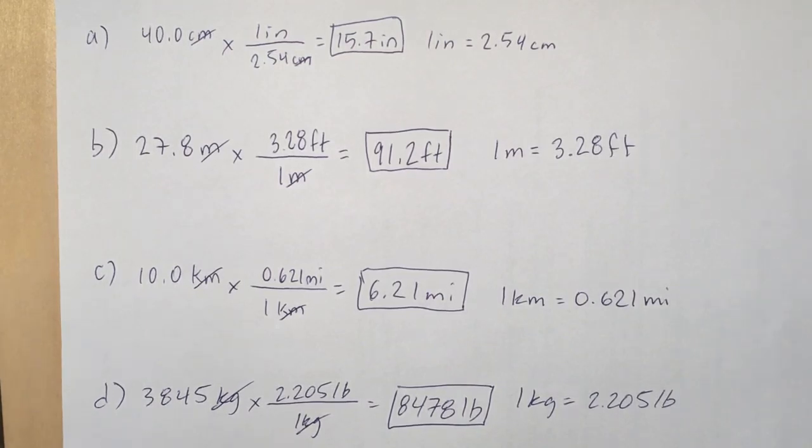The first set of units is inches and centimeters, both distance units, so we can convert directly between them. Just find the conversion factor which is given to us. We take that 40.0 centimeters, arrange the conversion factor in the appropriate way, putting the centimeters on the bottom and the inches on the top, canceling out the centimeters, and going to three significant figures because 40.0 has three sig figs in it.